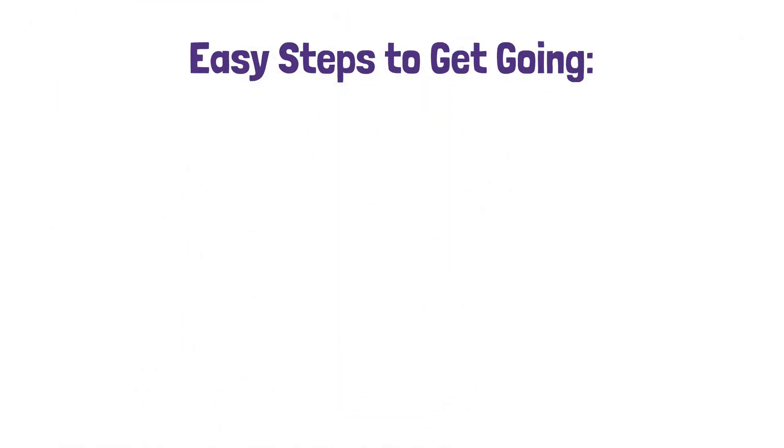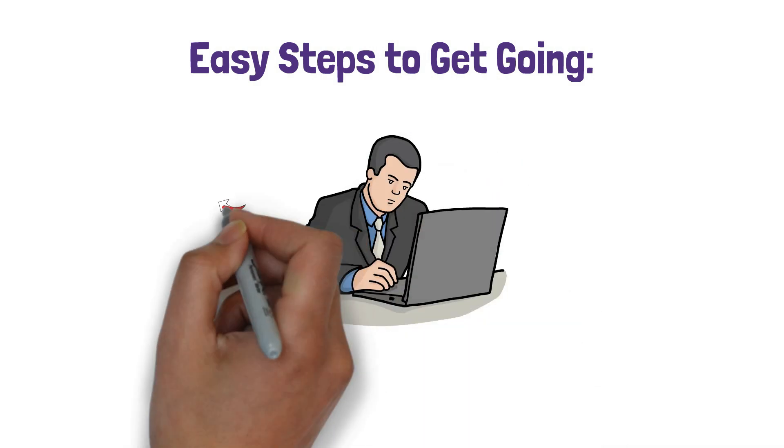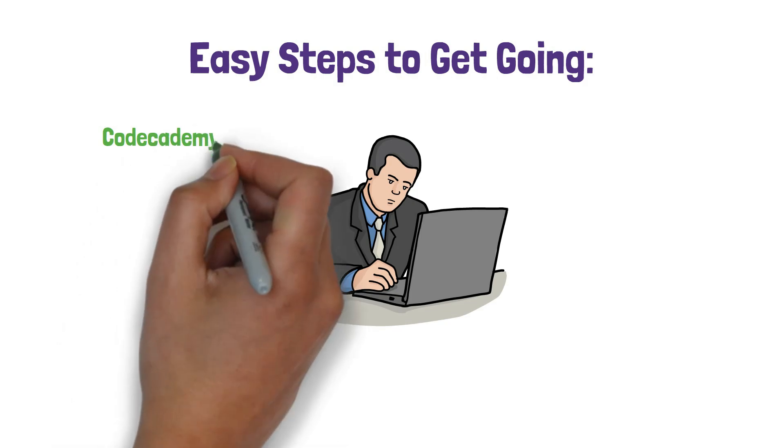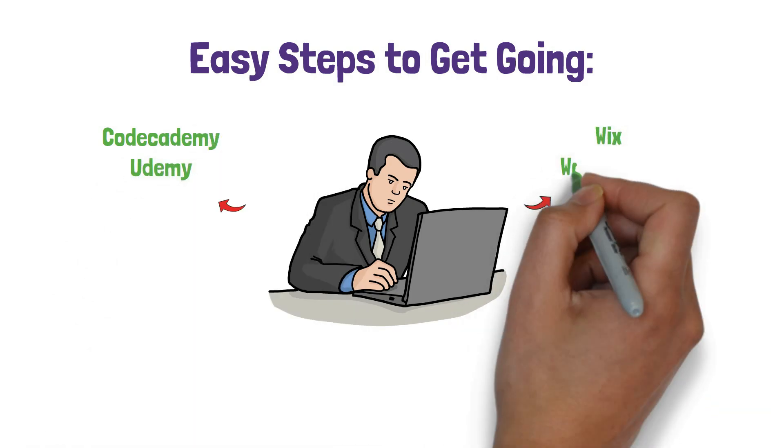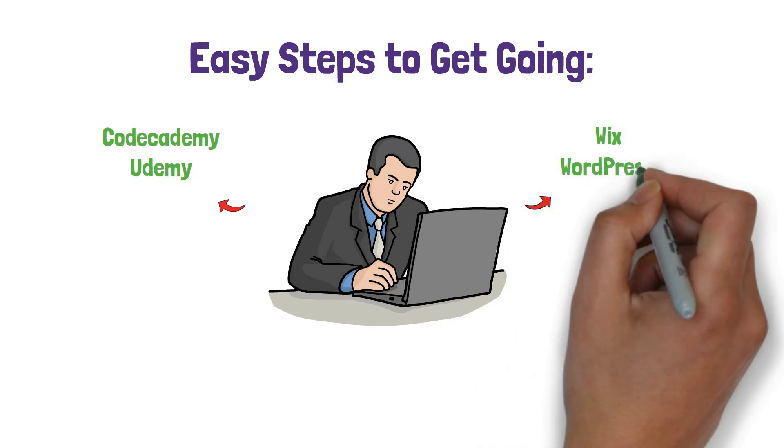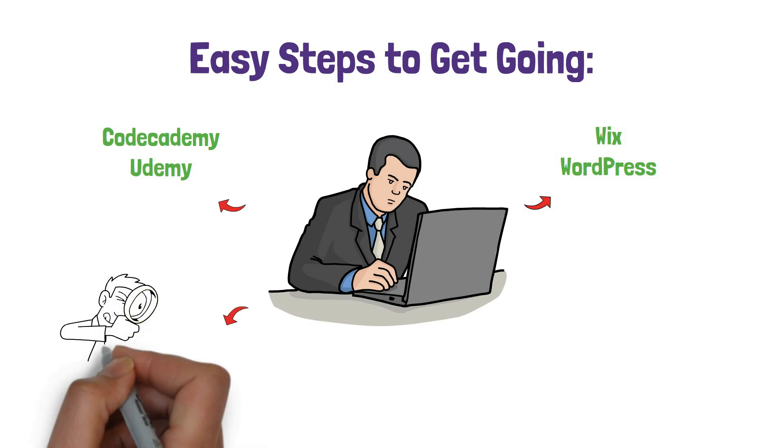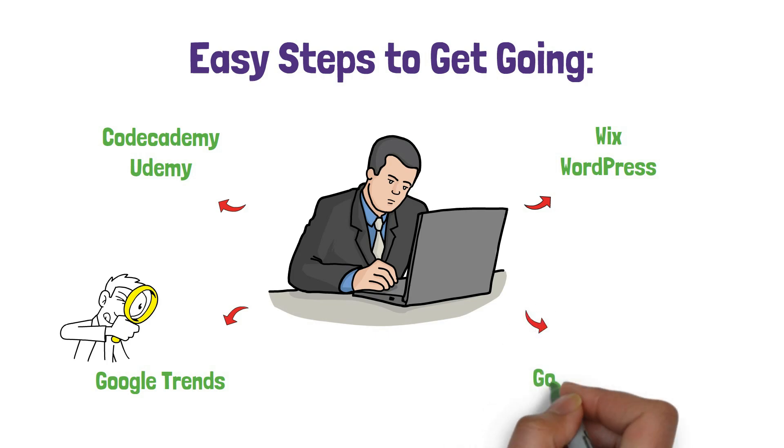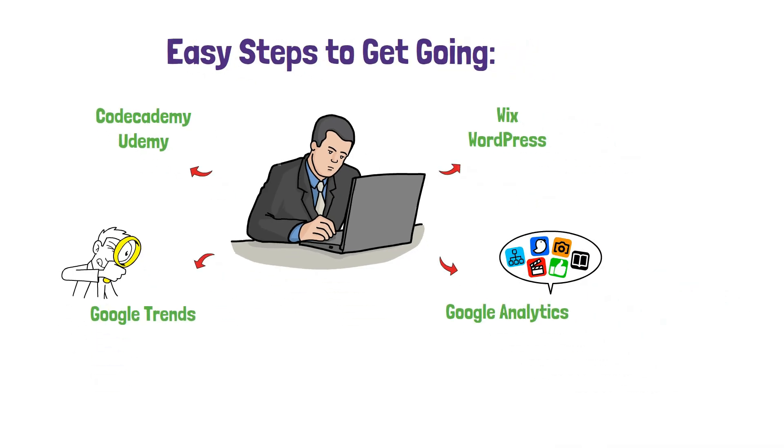Easy steps to get going: Start learning the basics of how to make websites. Websites like Code Academy and Udemy have easy courses for beginners. Try out website builders like Wix and WordPress which make it simpler to start creating websites. Use tools like Google Trends to find out what types of websites people are looking for. Get to know how people use websites with Google Analytics. This helps you make websites that people will like and want to use.